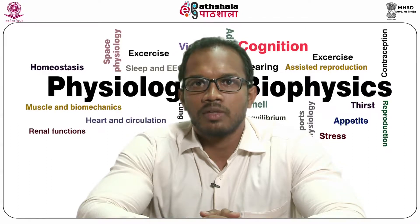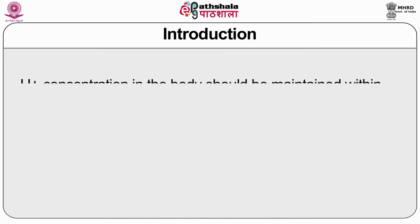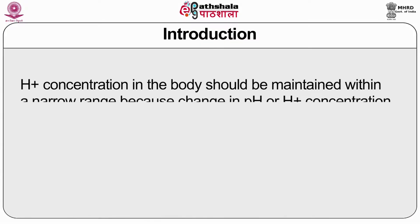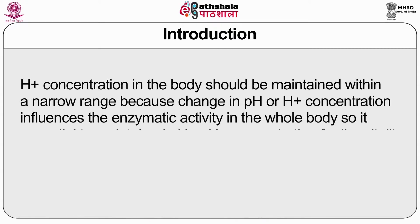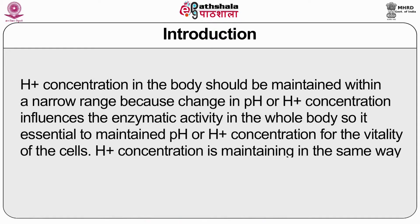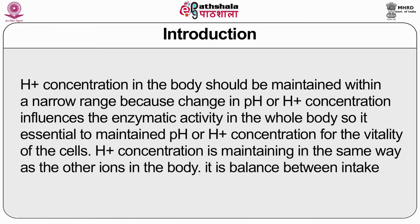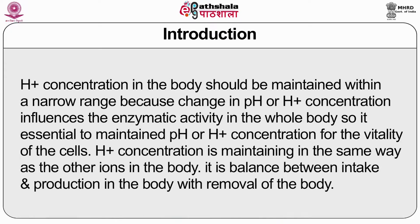Why is acid-base balance important for the body? Hydrogen ion concentration in your body should be maintained within a narrow range because changes in pH or hydrogen ion concentration influence enzymatic activity throughout the body. It is essential to maintain pH for the vitality of cells. Hydrogen ion concentration is maintained by balancing intake and production of hydrogen ions with their removal from the body.